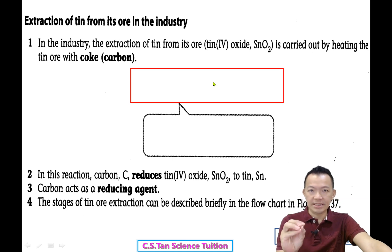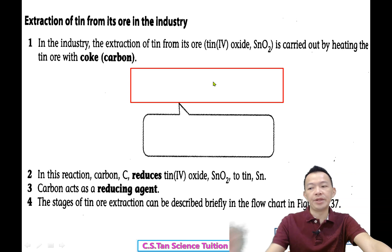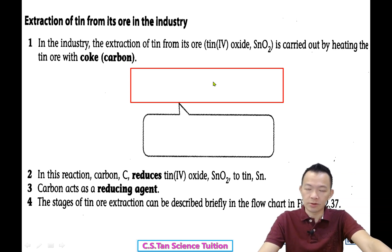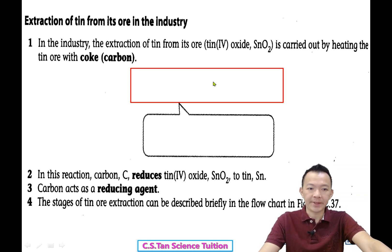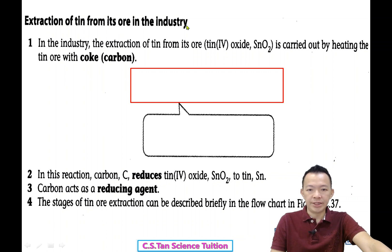Malaysia, last time, was actually the main, biggest tin exporter in the world. But now no more — now we are third. So, extraction of tin from its ore in the industry.